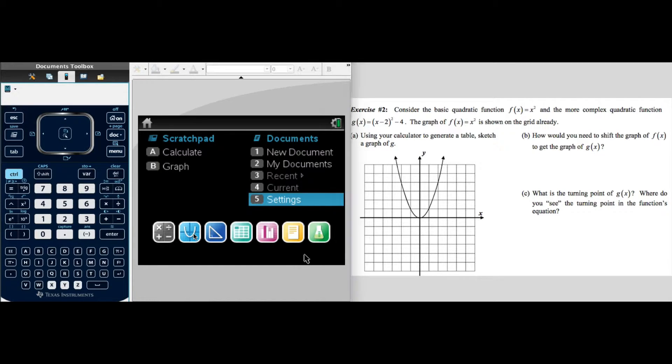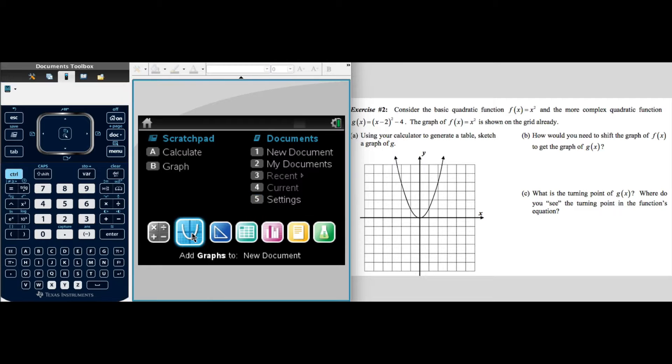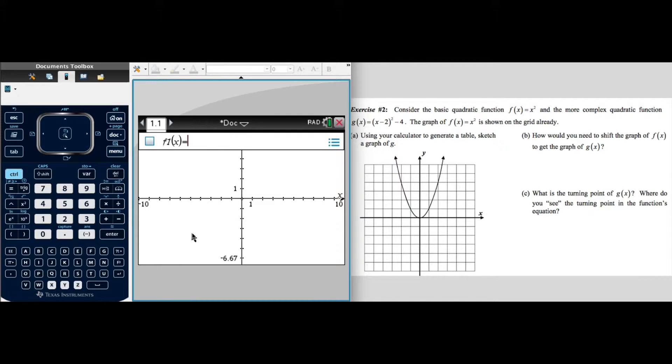To get to a table, we need to make a graph. So there we are. And we're just going to type in the function. So let's put in the parentheses: x minus 2, close those parentheses, minus 4, enter.